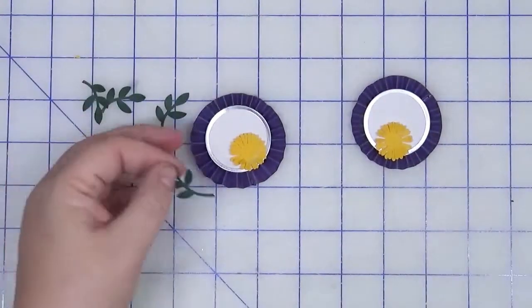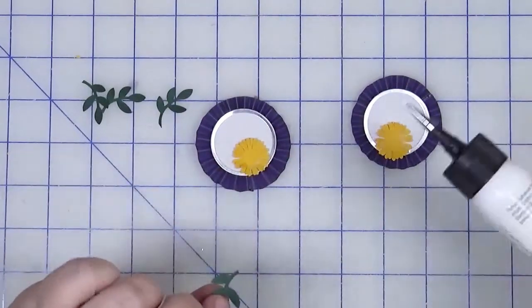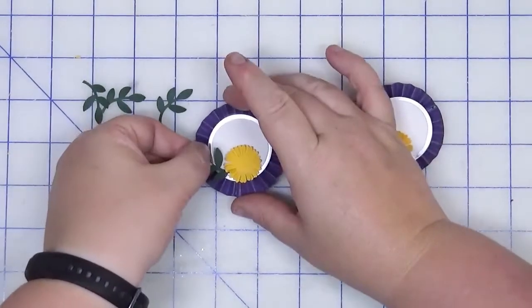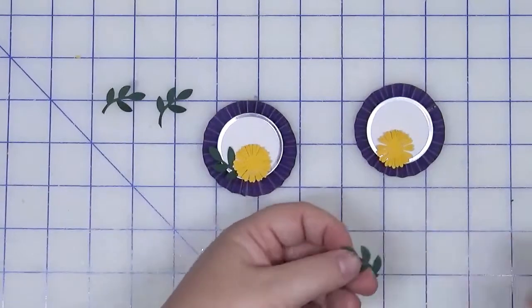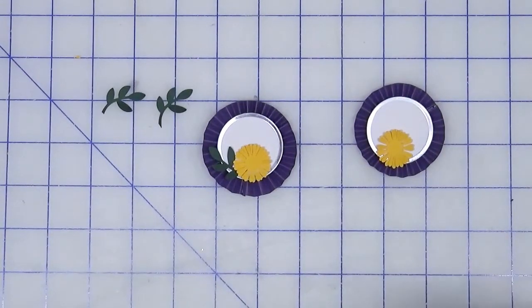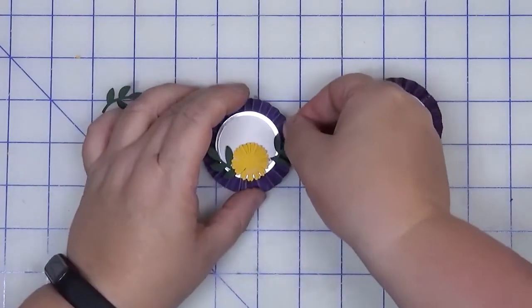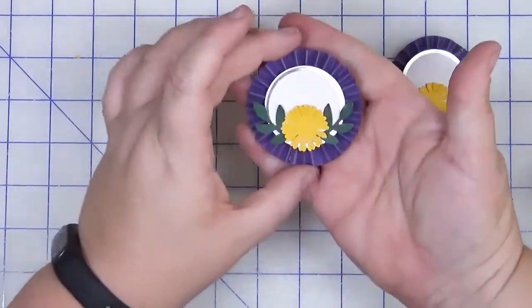We are then going to take the green. If we need to, we're going to trim off some of the branch and we are just going to tuck this on one side. Make sure we flip it over for the other so that it kind of frames the flower, something like that. Okay.